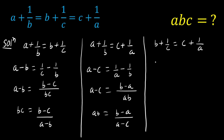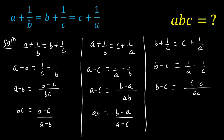Then equating b plus 1 over c equals c plus 1 over a. Taking b and c to the left hand side gives b minus c equals 1 over a minus 1 over c. With common denominator a times c, we get b minus c equals (c minus a) over (a times c), so a times c equals (c minus a) over (b minus c). This is equation number three.